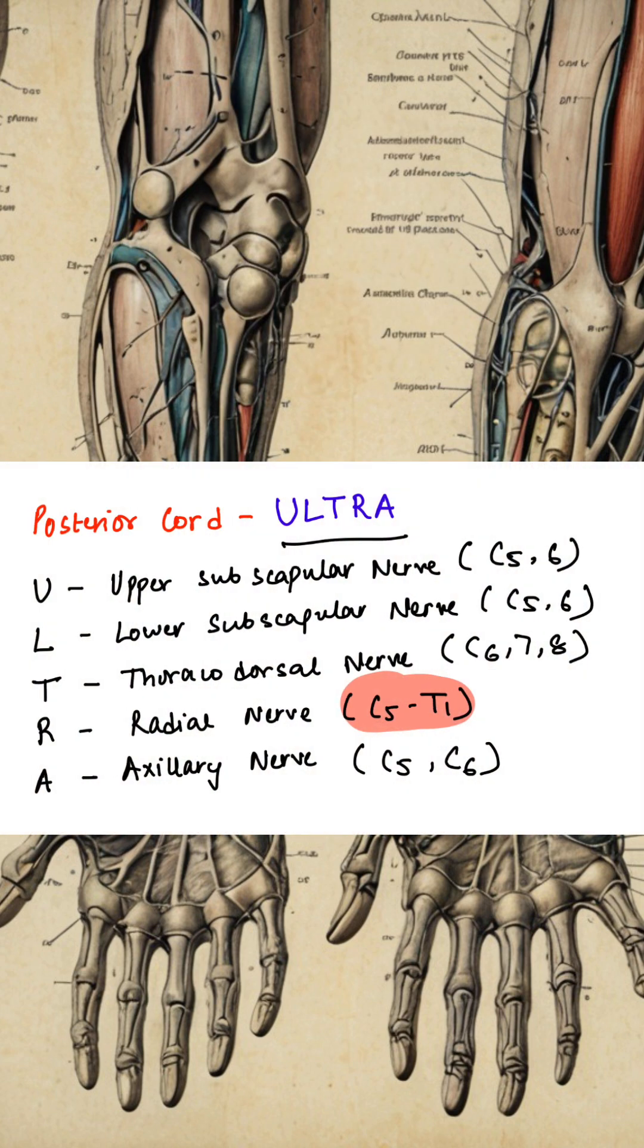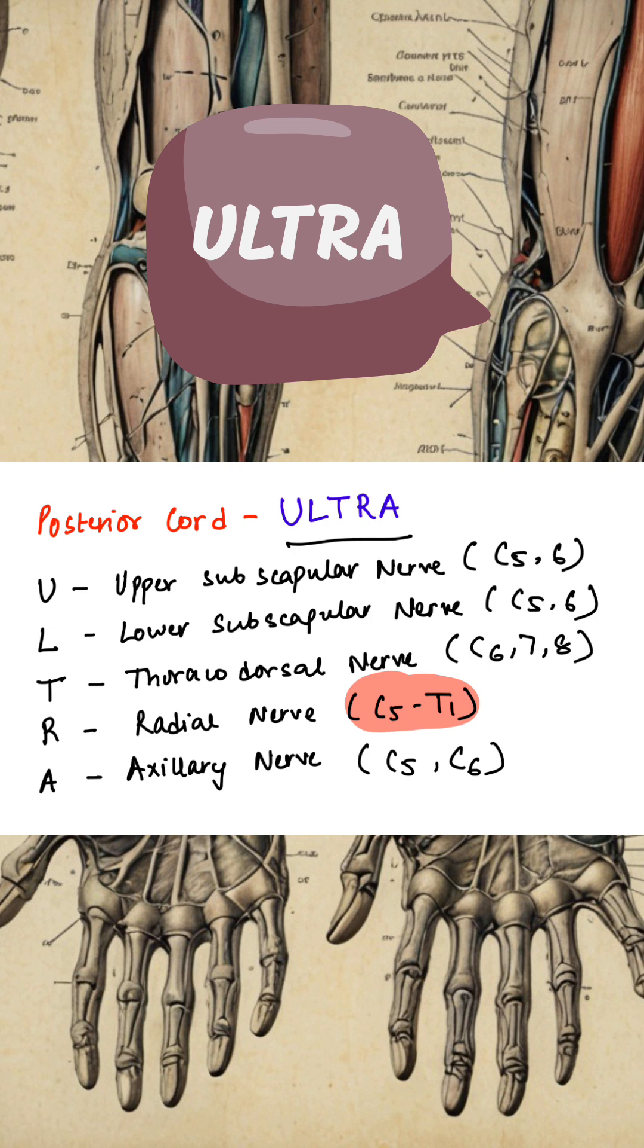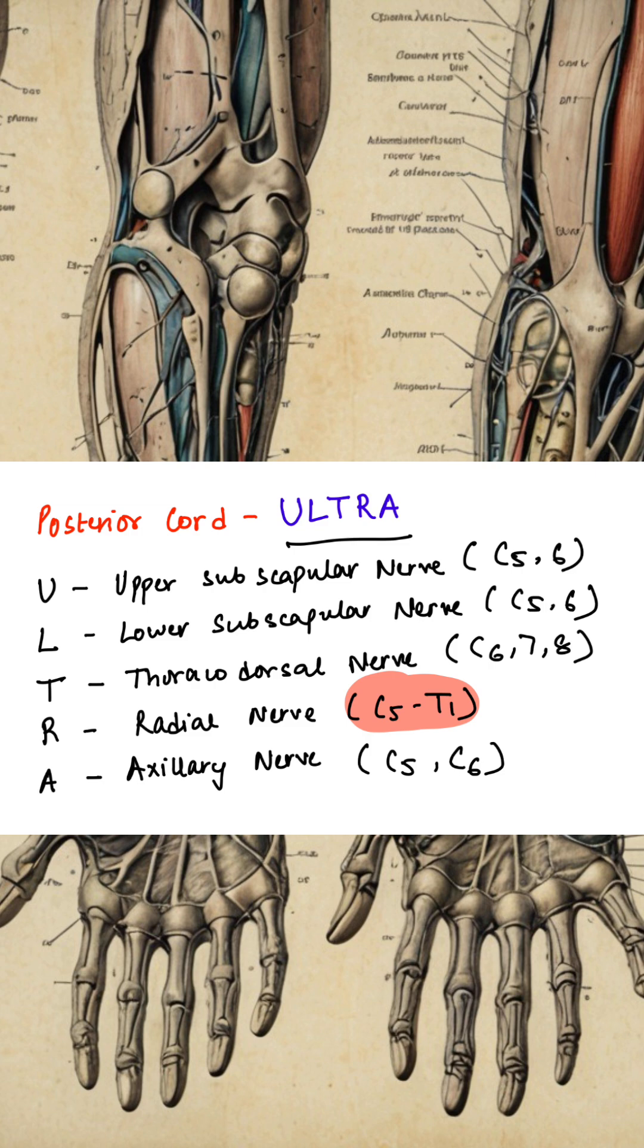For the branches of the posterior cord, you can memorize it by the mnemonic ULTRA: U, upper subscapular nerve, lower subscapular nerve, thoracodorsal nerve, radial nerve and axillary nerve.